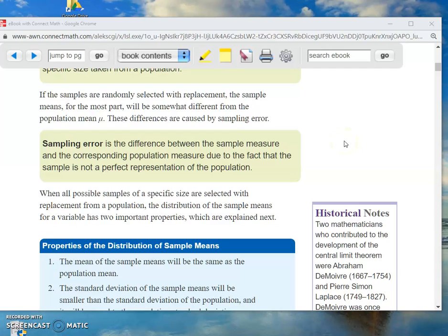These differences are caused by sampling error. And that's just a name we give it. That's the difference between the sample measure and the corresponding population measure, due to the fact that the sample is not a perfect representation of the population. We always have that. That's the problem with using statistics, obviously. You don't have the ability to measure the entire population.